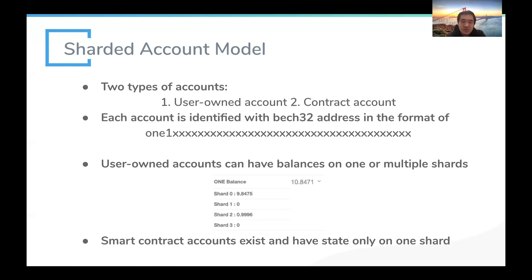A user can move balances within shard 0 or within shard 2, and can also move tokens across shards using cross-shard transactions. For smart contract accounts, the contract exists only in a single shard — when you deploy a smart contract you must specify which shard it belongs to, such as shard 0 or shard 1, and all storage and state for that contract exist only in that specific shard.